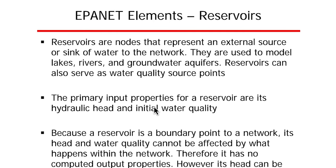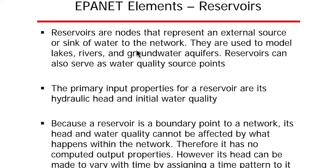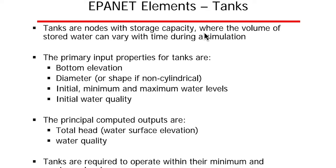The main elements of a water distribution network in EPANET include: source reservoirs, pumps, pipes, nodes, tanks, and valves. Reservoirs are nodes that represent an external source or sink of water to the network — used to model lakes, rivers, and groundwater aquifers. Reservoirs can also serve as water quality source points. The primary input properties for a reservoir are hydraulic head and initial water quality. Being a boundary point, a reservoir's head and water quality cannot be affected by what happens within the network.